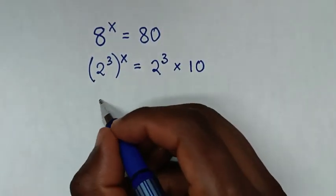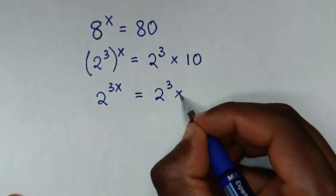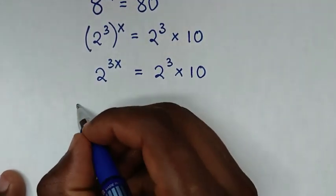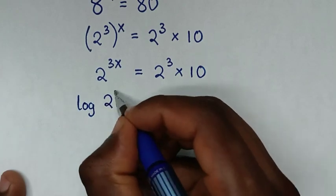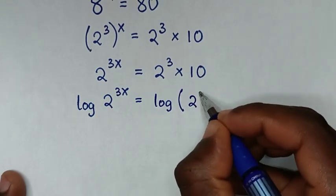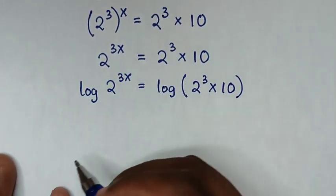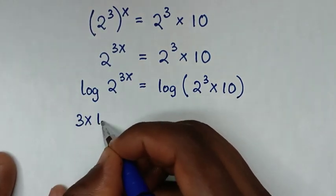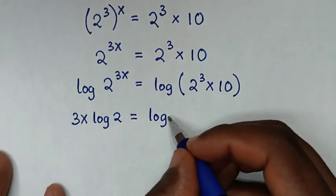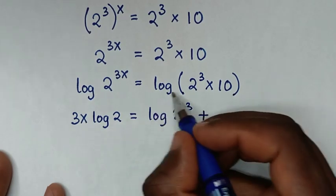Then it will be 2 to the power of 3x, is equal to 2 to the power of 3 times 10. Then, applying log, this power of 3x will move to the base, so it will be 3x times log of 2 is equal to log of 2 to the power of 3 times 10, which is the same as log of 2 to the power of 3, then plus log of 10.